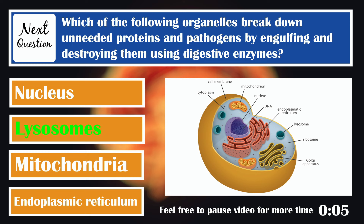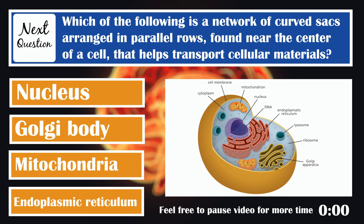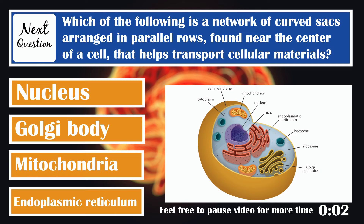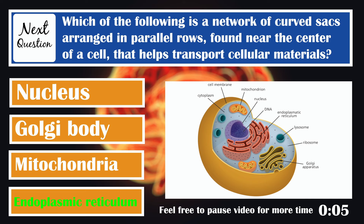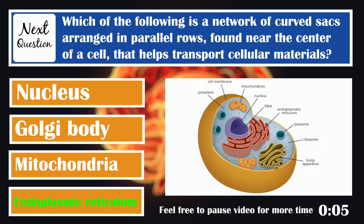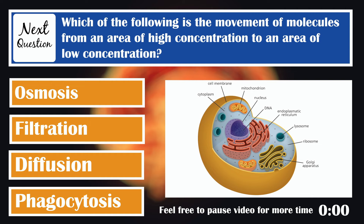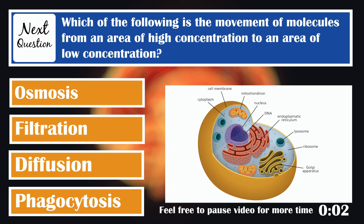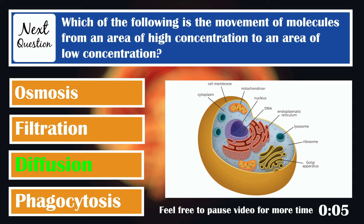Which of the following is the network of curved sacs arranged in parallel rows found near the center of a cell that helps transport cellular materials? Which of the following is the movement of molecules from an area of high concentration to an area of low concentration? Diffusion. During diffusion, molecules simply spread out or diffuse in a given space or across a cell membrane.